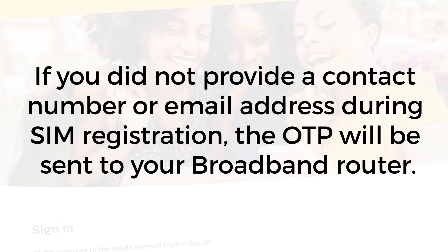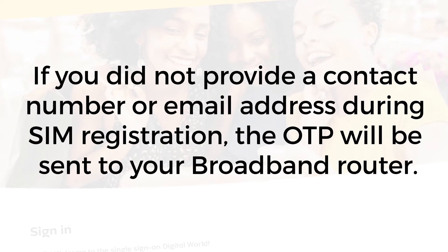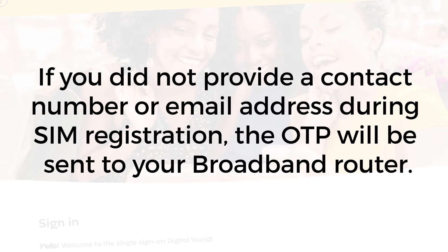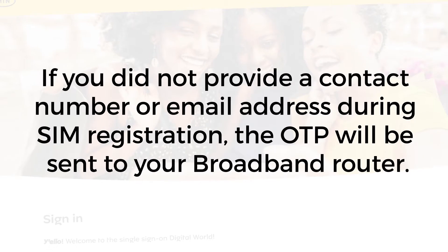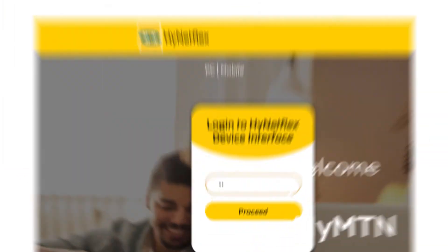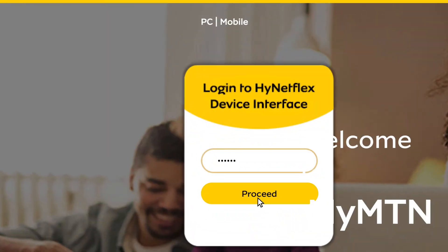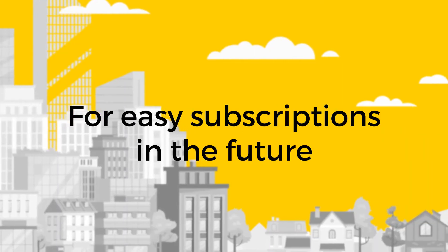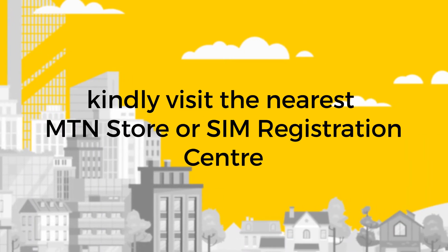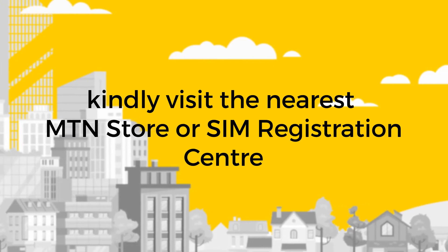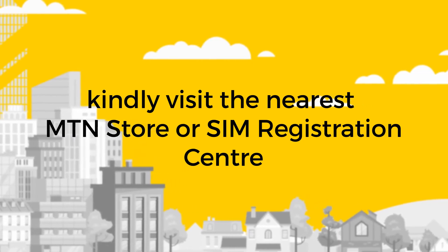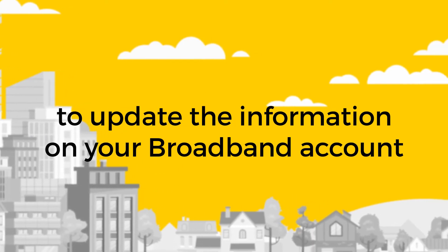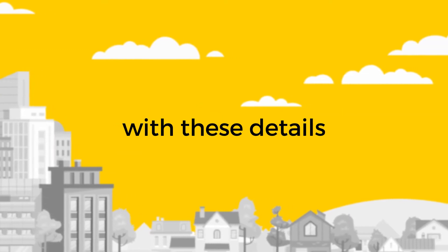If you did not provide a contact number or email address during the SIM registration, the OTP will be sent to your broadband router, and you will need to log in to your broadband router to get the OTP. For easy subscription in the future, visit the nearest MTN store or SIM registration center to update the information on your broadband account with these details.